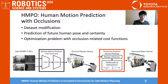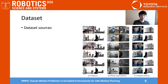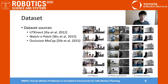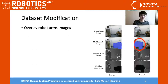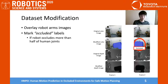For training, we use the RGBD datasets called UT Connect, Watch and Patch, and Occlusion Mocap. The dataset consists of RGB images, depth images, human skeleton joint positions, and action labels. To make a training dataset, the robot arm images are overlaid, and we mark the action labels as occluded if the robot arm occludes more than half of human joints.